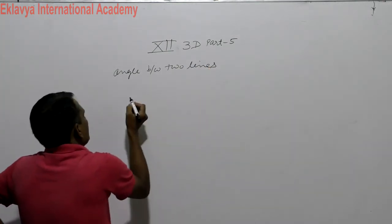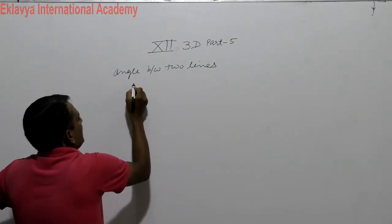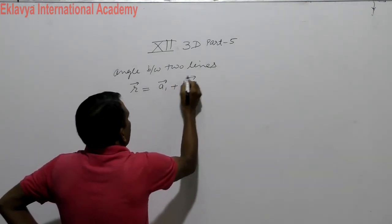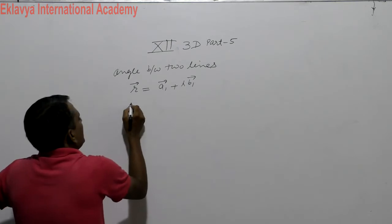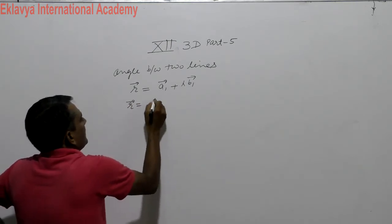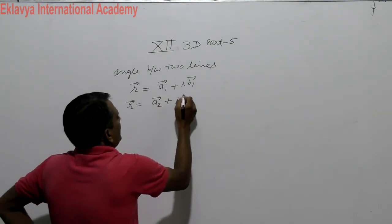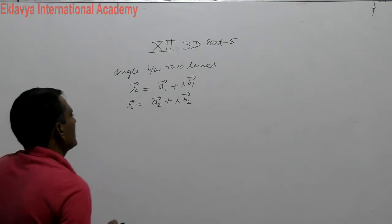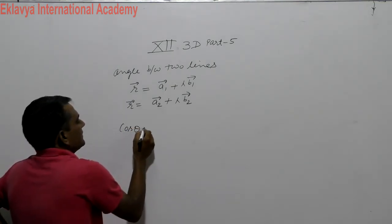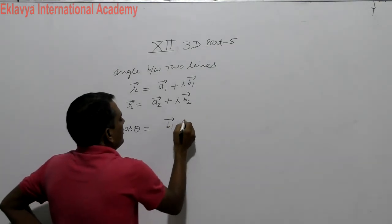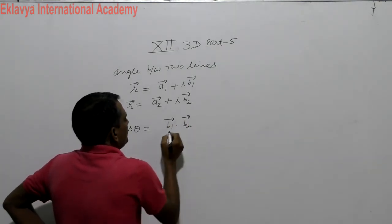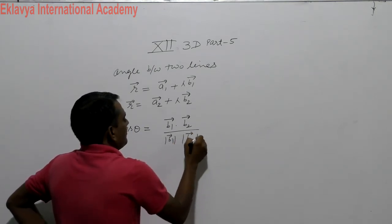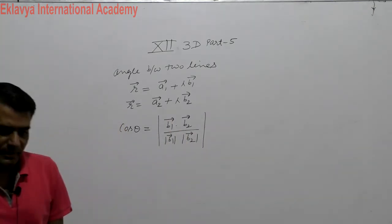One line is defined by R vector equal to A1 plus lambda B1, and another line is described by R vector equal to A2 vector plus mu of B2 vector. These are two lines. We will calculate the angle between these two lines, which is defined by B1 dot B2 divided by magnitude of B1 vector and magnitude of B2 vector.